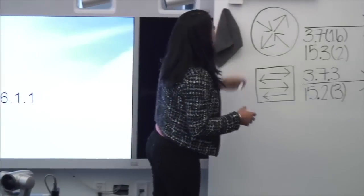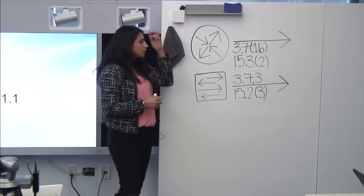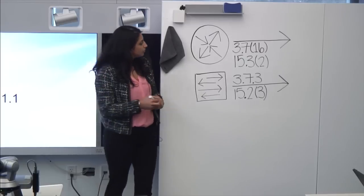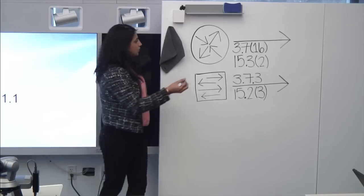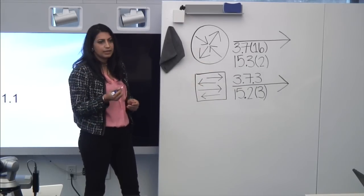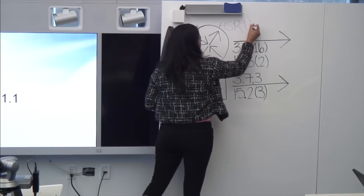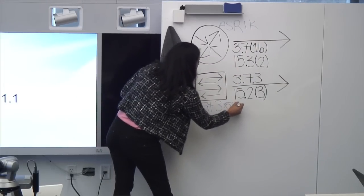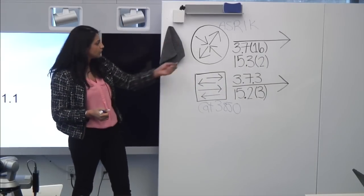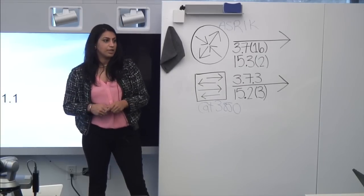Before I go into the presentation, let's talk about some of the problems that customers faced prior to 16.1.1. In any customer deployment, we have a combination of routers and switches. I'll give an example using ASR 1K and Catalyst 3850. If we look at the current release trains for ASR 1K, first and foremost, there are two versioning systems, which itself is very confusing for many of our customers.